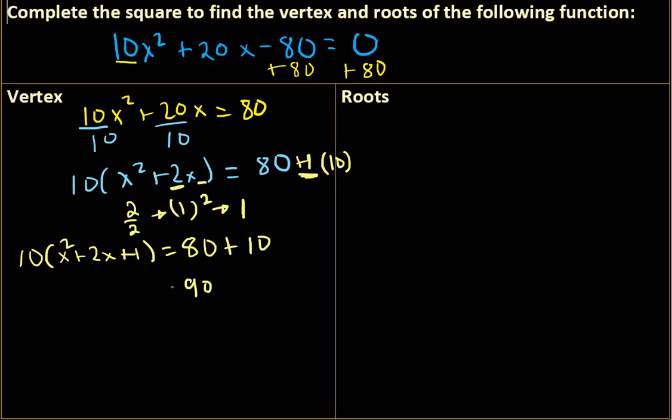So we get 10 times x squared, and now we're just going to factor the trinomial, which is pretty easy to do since we completed the square. It's this term and the sign. So we have x plus 1 quantity squared equals 90.